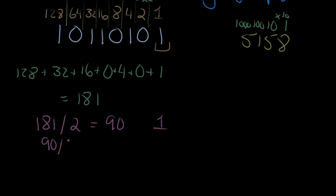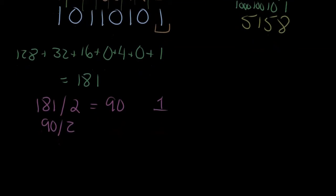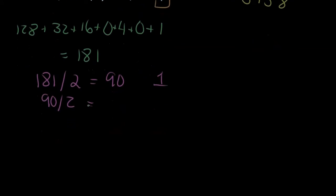181 divided by 2 gives me 90 with a remainder of 1. Now I come down here on the next one and I divide 90, and dividing 90 is going to give me 45, and there's no remainder on that one. Now 45 divided by 2 is going to give me 22, but I have a remainder of 1.